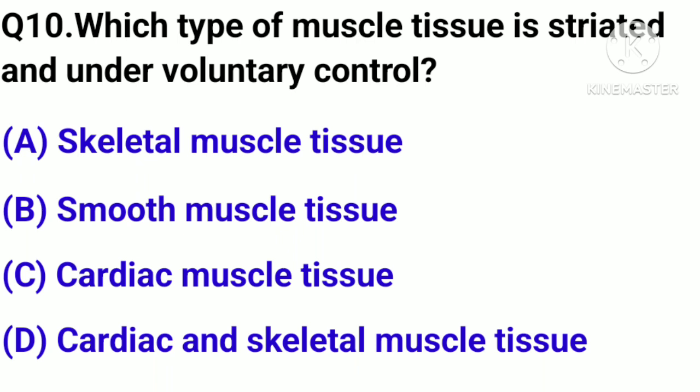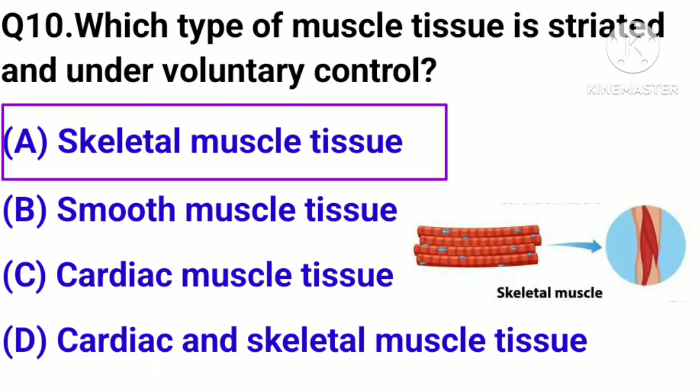Question number 10. Which type of muscle tissue is striated and under voluntary control? Option A: Skeletal muscle tissue. B: Smooth muscle tissue. C: Cardiac muscle tissue. D: Cardiac and skeletal muscle tissue. We'll be right back.